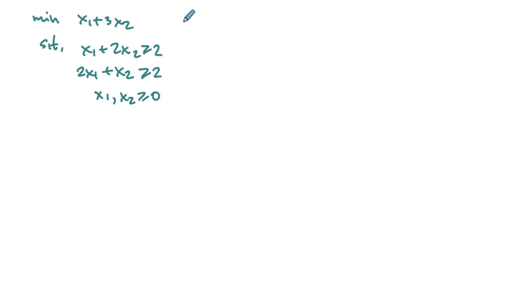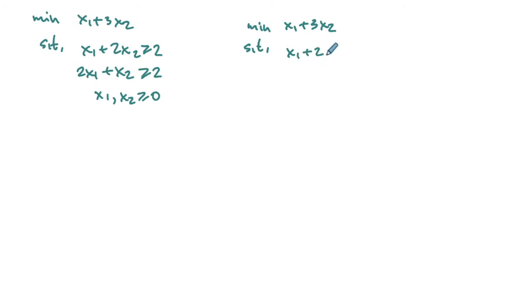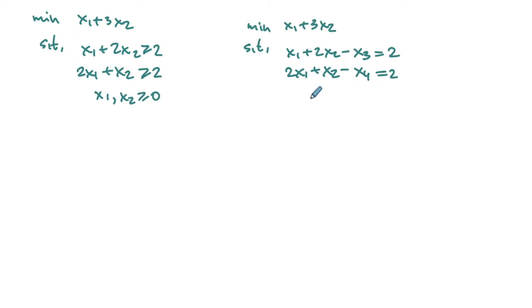With the simplex method, we convert the problem to standard form by introducing excess variables. We have minimize x1 plus 3x2, subject to x1 plus 2x2 minus x3 equals 2, and 2x1 plus x2 minus x4 equals 2, with x1, x2, x3, x4 all non-negative.